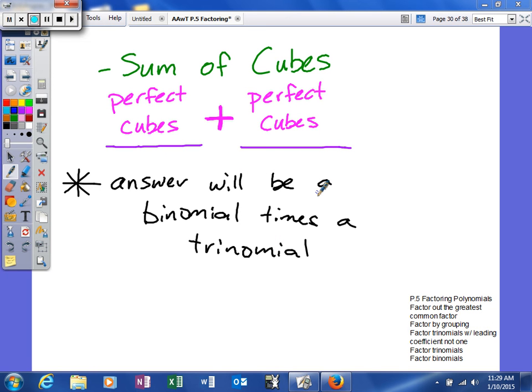All right, last thing we're going to talk about in this little section of P5 here, factoring polynomials, is sum of cubes. If you notice, there is no sum of squares, so you can't factor two perfect square terms separated by a plus sign, but you can do sum of cubes.